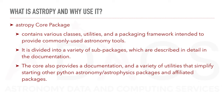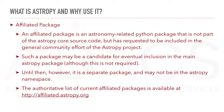The core package contains various classes, utilities, and packaging frameworks intended to provide commonly used astronomy tools. The core also provides documentation and a variety of utilities that simplify starting other Python astronomy or astrophysics packages and affiliated packages. An affiliated package is an astronomy-related Python package that is not part of the AstroPy core, but has requested to be included in the general community effort of the AstroPy project. Such a package may be a candidate for eventual inclusion in the main AstroPy package. You can look at all the affiliated packages at the following link.